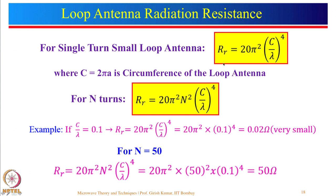For a single-turn small loop antenna, the radiation resistance R_R is given by an expression involving circumference C (equal to 2*pi*A or 2*pi*R for circular loops, or 2*(L+W) for rectangular loops). For example, with C/lambda equal to 0.1, R_R is only 0.02 ohm — far too small to match 50 ohm. Using N turns increases R_R by a factor of N-squared. With N equal to 50 turns, R_R becomes 50 ohm.